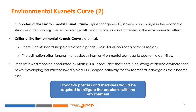Supporters of the EKC argue that if there is no change in economic structure or technology use, economic growth leads to proportional increases in the environmental effect — the scale effect. However, economic development normally happens in stages: initially agricultural activities dominate, followed by industrialization, and finally a shift towards information and service-oriented activities. This structural change, along with better environmental awareness, technological changes, and better environmental management initiatives, improves the environment.